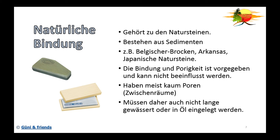Bei der natürlichen Bindung handelt es sich um Natursteine – sogenannte Sedimentgesteine. Bestes Beispiel: belgischer Brocken, Arkansas und die japanischen Natursteine. Die Bindung und Porigkeit ist durch die Natur schon vorgegeben und kann nicht mehr beeinflusst werden. Die meisten haben kaum Poren, weil das Gestein von Natur aus gut verfestigt ist. Daher verwendet man diese Steine meistens zur Endpolitur von Werkzeugen. Beim Schreiner zum Beispiel zieht man das Stechbeitel zum Schluss ganz leicht damit ab. Da es Natursteine sind und nicht viel Wasser aufnehmen, reicht es, kurz etwas Wasser oder Öl zu benutzen.